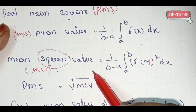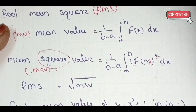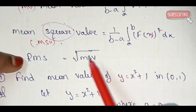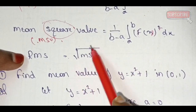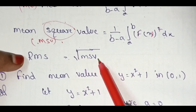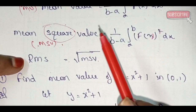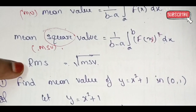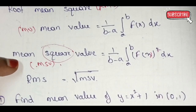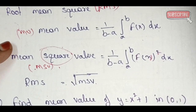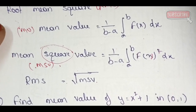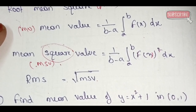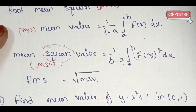The mean square value (MSV) is the squared mean value. RMS is the root over the MSV value. We will solve for mean value, mean square value, or RMS value.